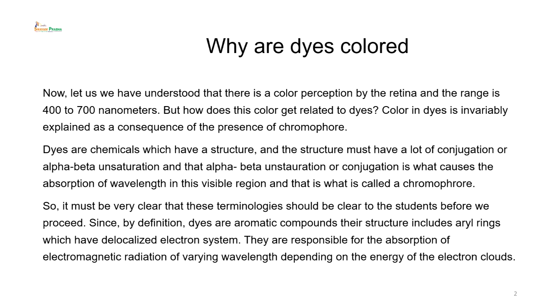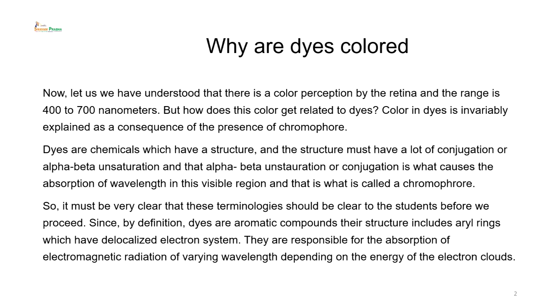By definition, dyes are aromatic compounds; their structure includes aryl rings which have a delocalized electron system. These are responsible for the absorption of electromagnetic radiation of varying wavelength depending on the energy of the electron cloud. It is these conjugated molecules or aryl rings which actually absorb the wavelength of light and excite the pi electrons in the electron cloud.